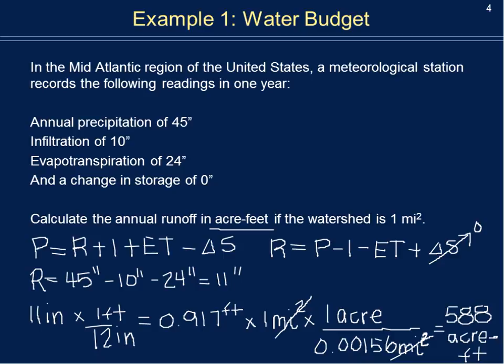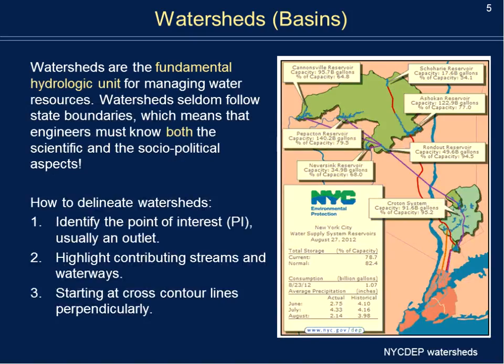Now that we've calculated the water budget, let's talk more about the term watershed, because I just introduced it without much discussion. A watershed is what we call a basic hydrological unit for managing water resources. Think of it as a large bowl or tub — this is where you store your water, and you want to know the volume of water inside. You can then plan your resources and know how much water is available for drinking, industrial, or commercial uses.